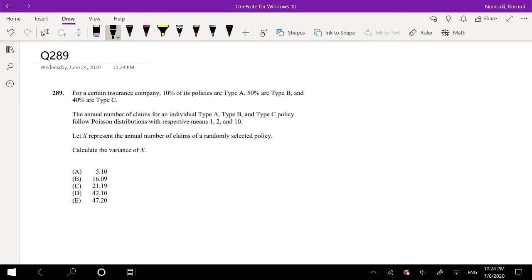Okay, let's see if you've already attempted it, let's just dive right in. For a certain insurance company, 10% of its policies are type A, 50% of its policies are type B, and 40% is type C.